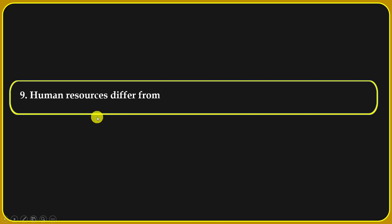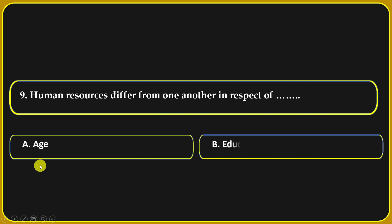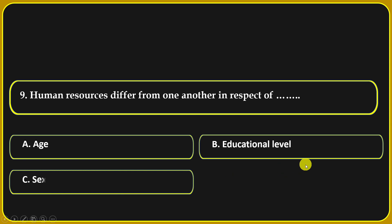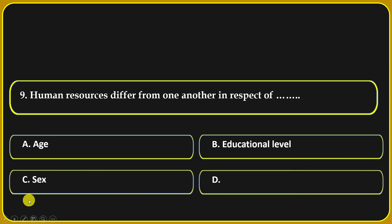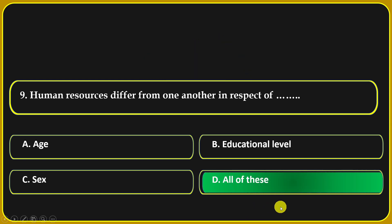Human resources differ from one another in respect of age, educational level, sex, or all of these. All of these is the correct answer — that means age, education level, and sex.